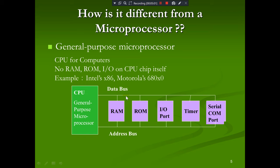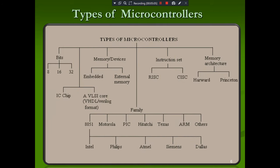What are the different types of microcontrollers available? First, considering the number of bits, you can have an 8-bit, 16-bit, or 32-bit microcontroller. It can be classified as an IC chip or a VLSI core. It can use VHDL (Very High Speed Hardware Description Language) or VLSI format. With respect to memory or device, it can have embedded or external memory.